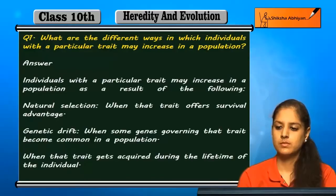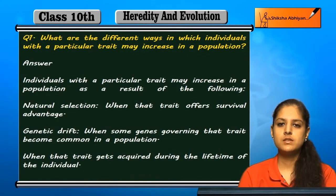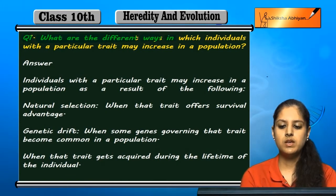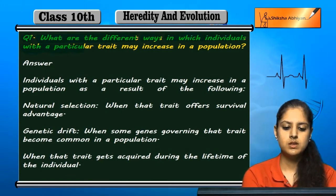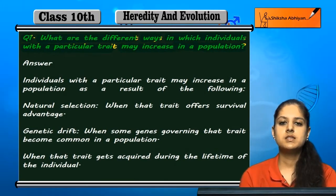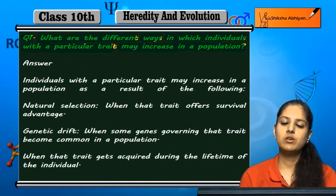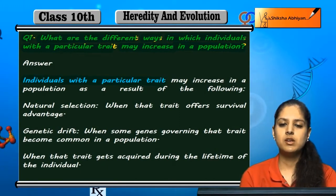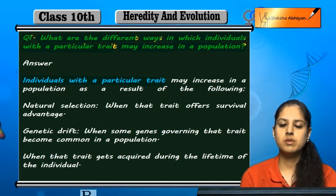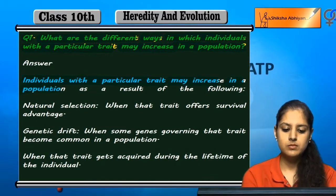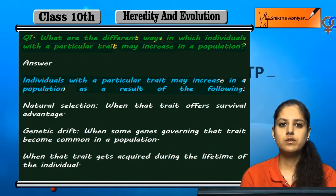Let us discuss a few questions. First question: what are the different ways in which individuals with a particular trait may increase in a population? Individuals with a particular trait may be increased in a population as a result of the following ways.